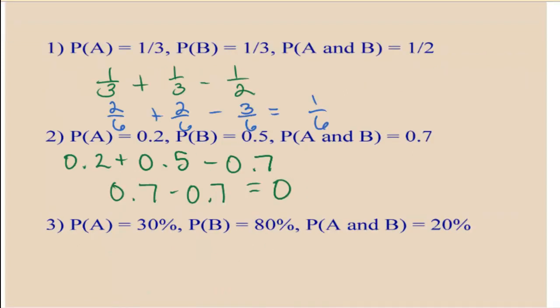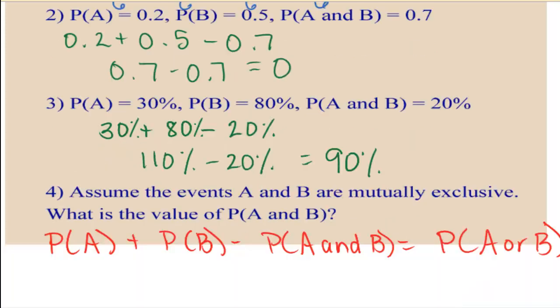Here we're working with percentages, so try this one. The individual events added together minus the overlapping equals the or. So we end up with 110%, which of course is impossible, minus 20%, so we use the 90% probability of getting event A or event B.